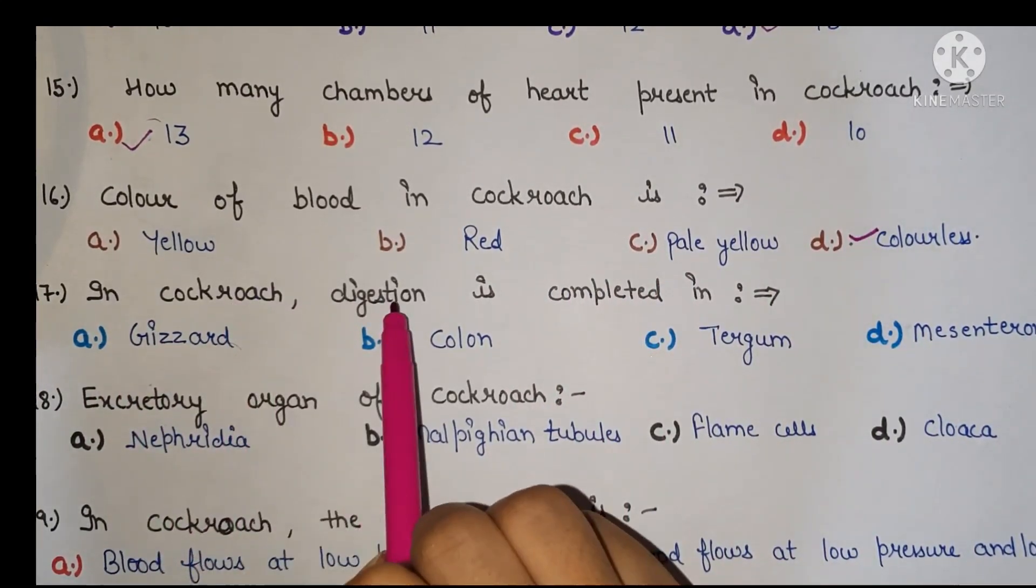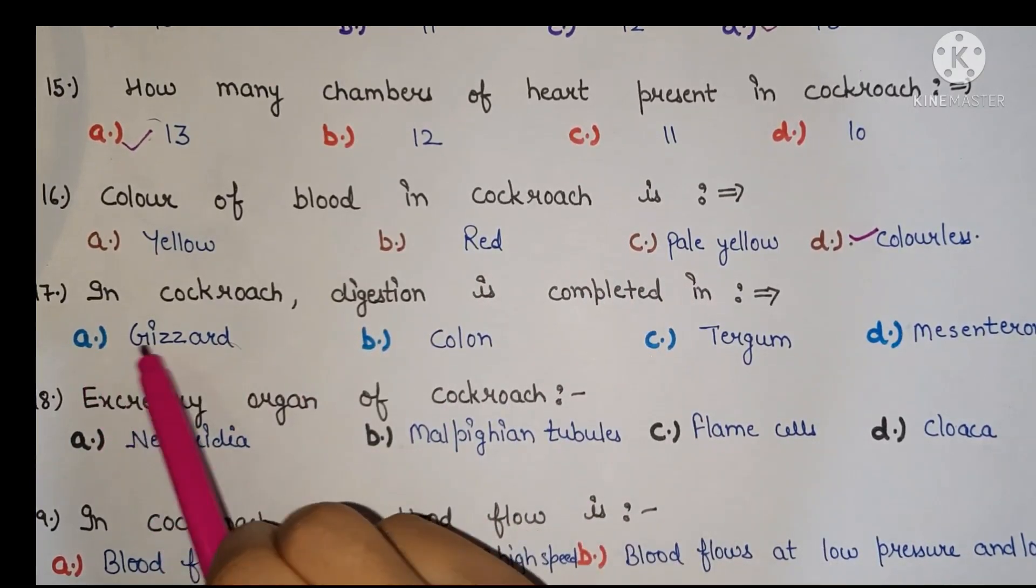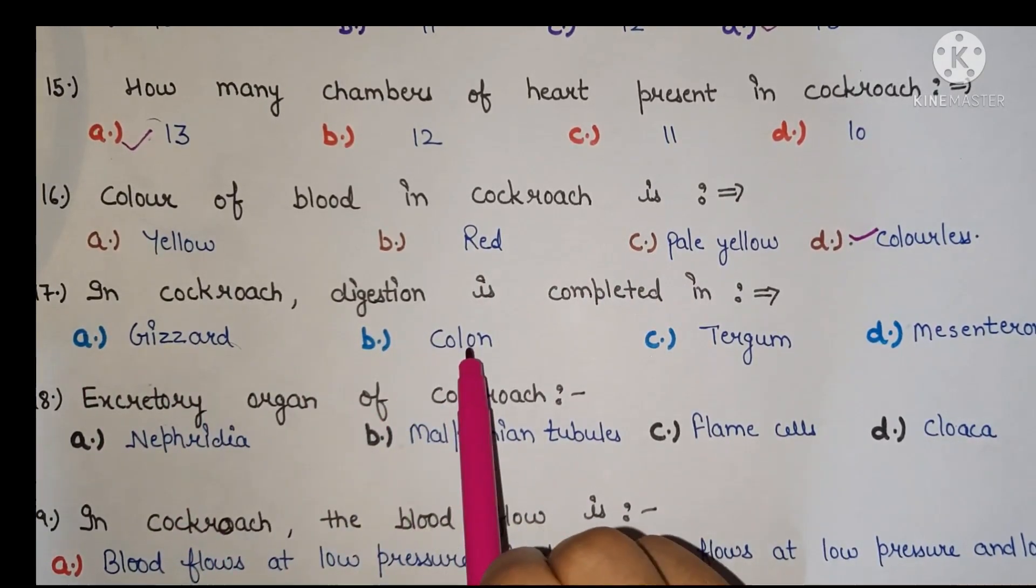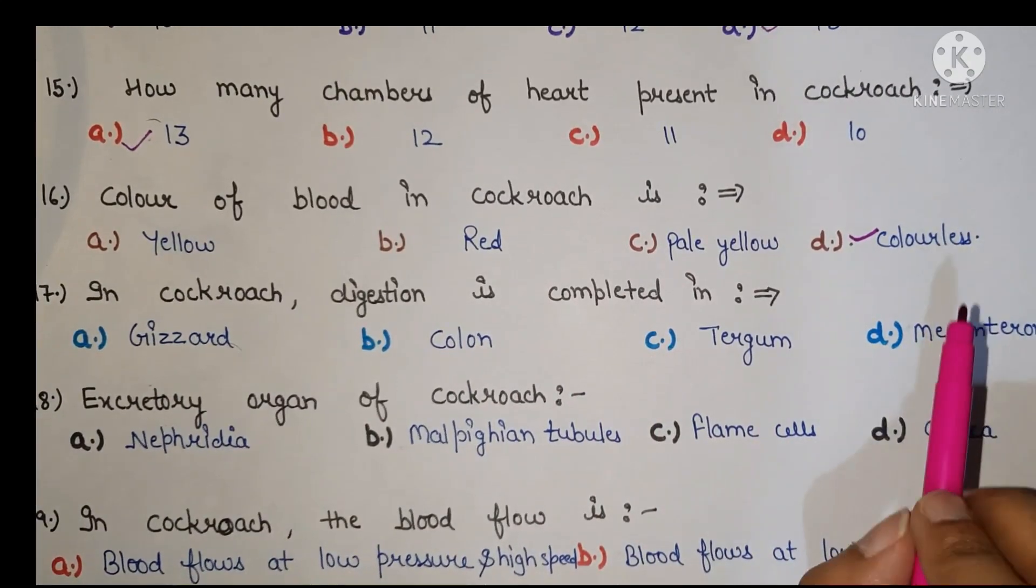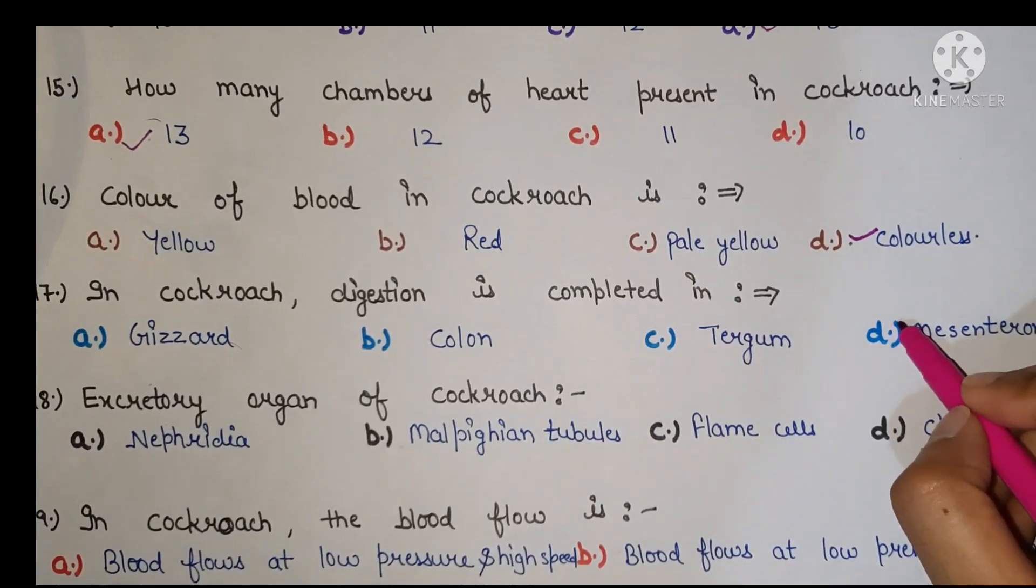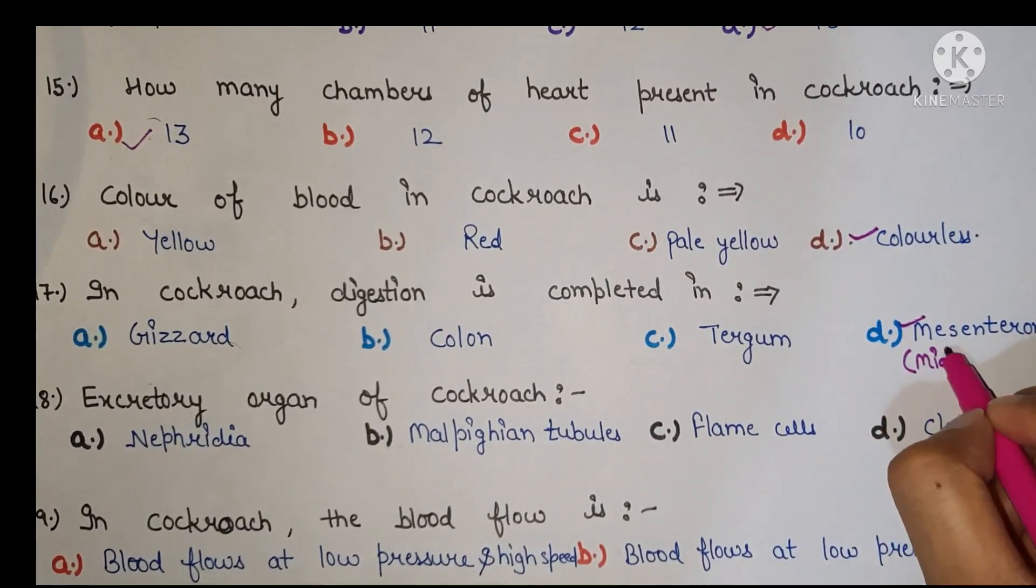Next, in cockroach digestion is completed in A gizzard, B colon, C tergum, D mesenteron. The right answer is D, mesenteron. Mesenteron ko midgut bhi bolte hain.